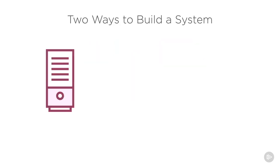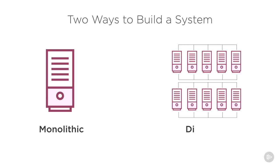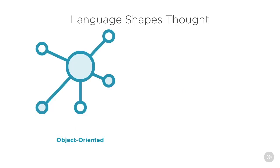Let's take a moment to understand why Scala is so relevant for data professionals. Really there are two common ways to architect a system. Monolithic systems have single large and expensive computers, while distributed systems use a large number of relatively cheap machines wired together. As data sets get larger and larger, distributed systems seem to be the way of the future. The vast majority of programmers have traditionally written code for monolithic systems, which is why the object-oriented programming paradigm is so popular.